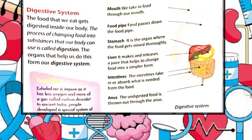Your stomach, attached to the end of the esophagus, is a stretchy sack shaped like the letter J. It has three important jobs: to store the food you have eaten, to break down the food into a liquidy mixture, and to slowly empty that mixture into the small intestine.